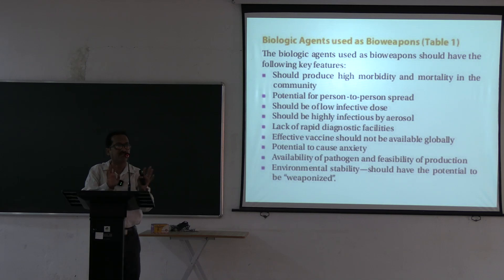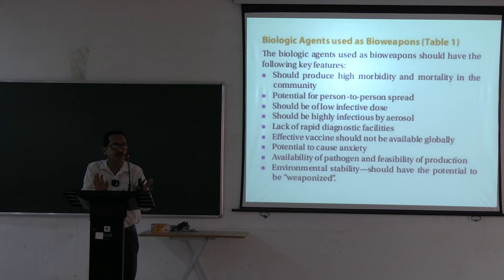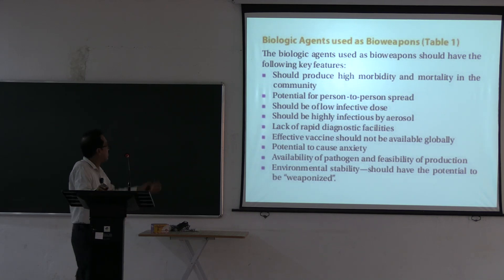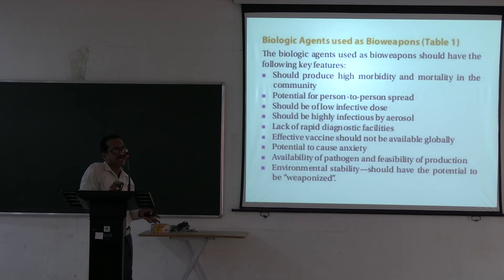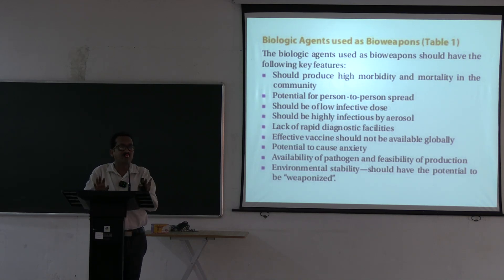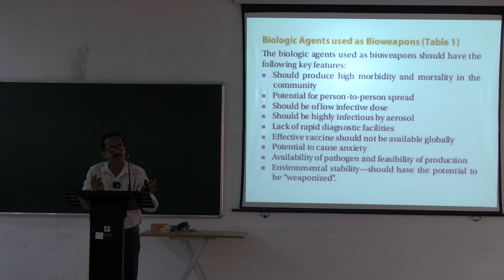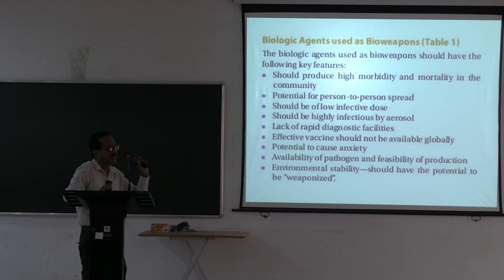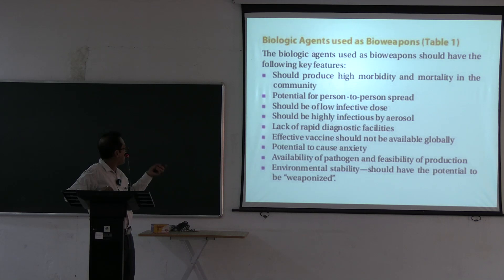A common exam question asks: what are the characteristics of a biological weapon? It should produce high morbidity and mortality, be easy to spread, have person-to-person spread, require a low infective dose, be highly infectious by aerosol, and rapid diagnostic facilities should not be available.